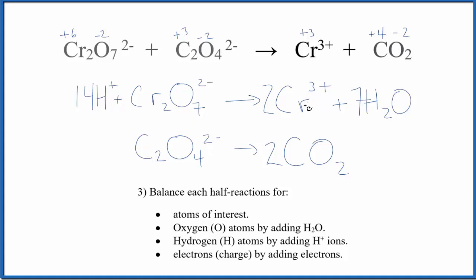At this point, we balance the charge. Here we have 14+ and 2-, that's 12+ plus two times 3+, which is 6+. If I add six electrons here, that'll equal 6+ on both sides.